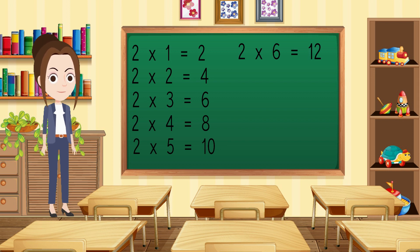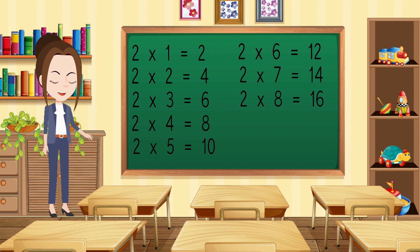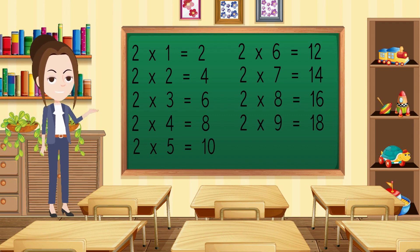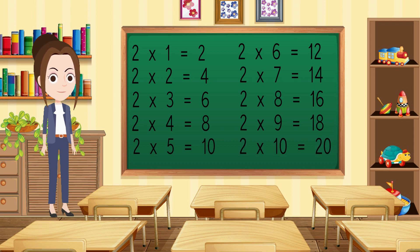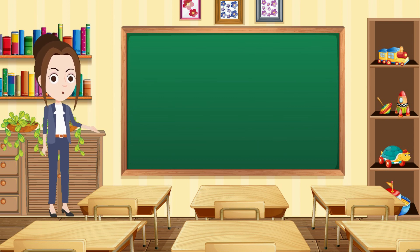Two sevens are fourteen. Two eights are sixteen. Two nines are eighteen. Two tens are twenty.